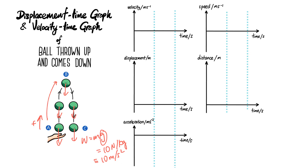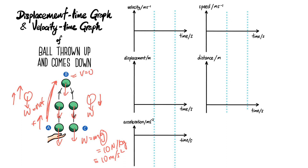As the ball goes from A to B, the motion is upwards and the only force acting is the weight. This weight is the net force, and because it's opposite to the direction of the ball's motion, it causes the ball to slow down — to decelerate. So from A to B, the speed is decreasing, and at point B, the highest point, the speed is zero — the ball is momentarily at rest making a U-turn.